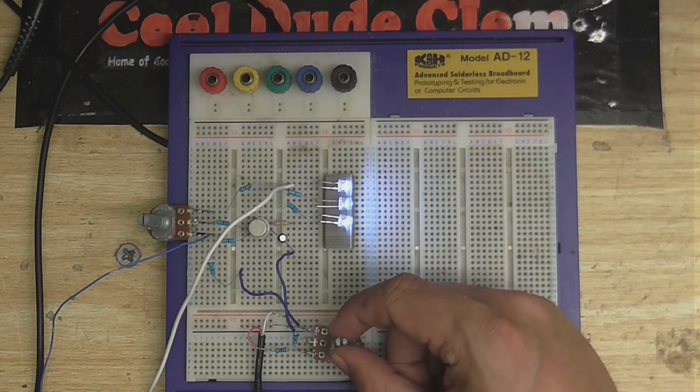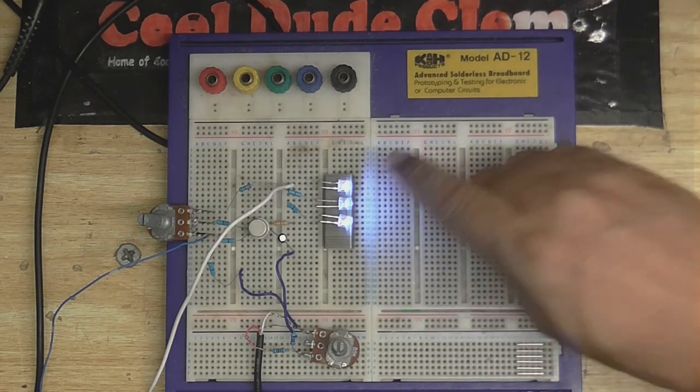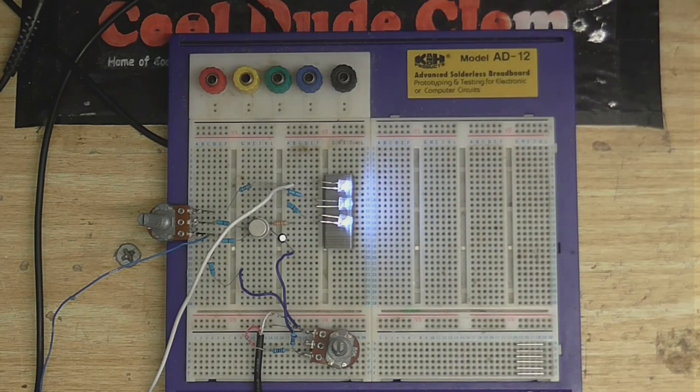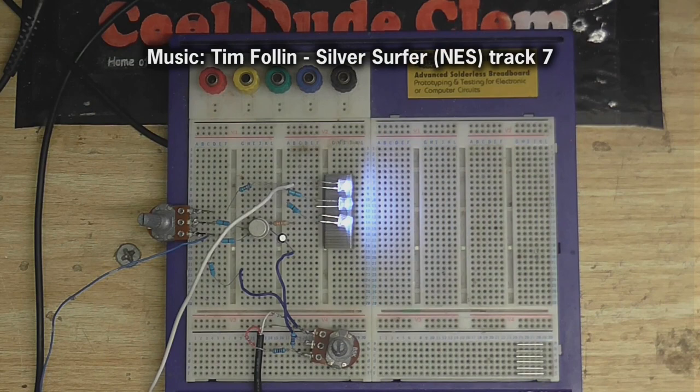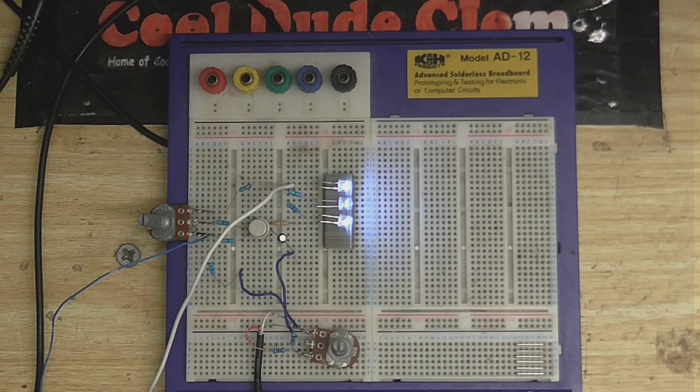And this control here controls the amount of modulation we get. So, I'm going to play some music. And you'll see these lights flicker in time with the sound. Okay, I'm not going to bore you with the rest of that. But, let's set this thing up so we can actually transmit some audio.